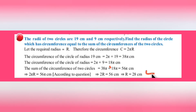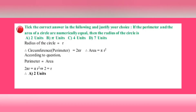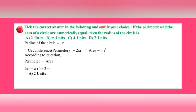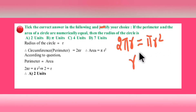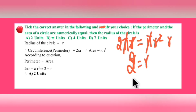Next question: If the perimeter and the area of a circle are numerically equal, find the radius. Perimeter (circumference) = 2πr and area = πr². Setting them equal: 2πr = πr². The π cancels, and one r cancels, leaving 2 = r. Therefore the radius is 2 units.